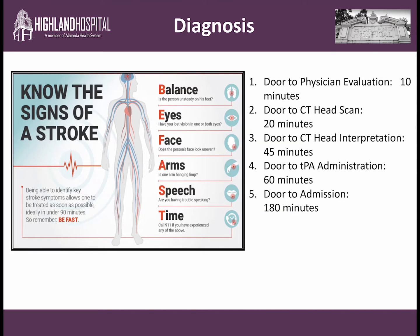So how do we diagnose stroke? The mnemonic used for identifying the signs of stroke is BE FAST: B for imbalance on the feet, E for loss of vision in one or both eyes, F for facial asymmetry, A for weakness in arms or legs, S for problems with speech, and T for time. Timely recognition and intervention is the backbone of stroke therapy.